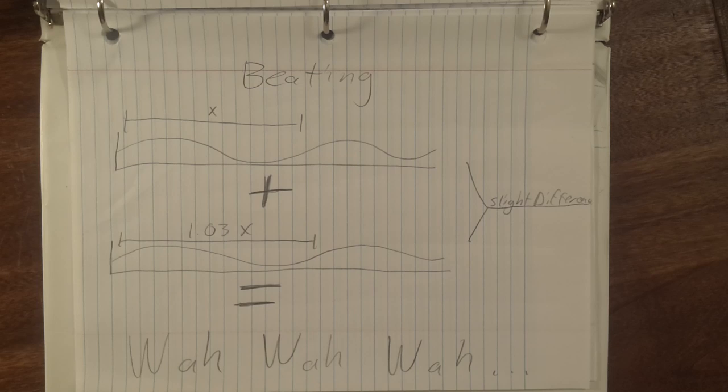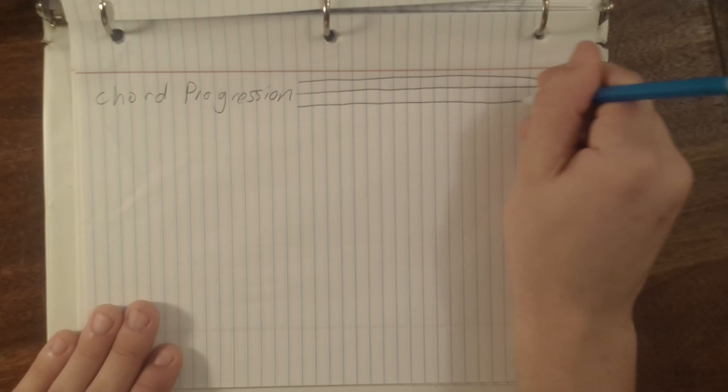One important issue with using pure J-I is chromatic drift. Those of us familiar with standard chord progressions will immediately recognize the 1-6-2-5 chord progression, which sounds like this in standard western tuning.